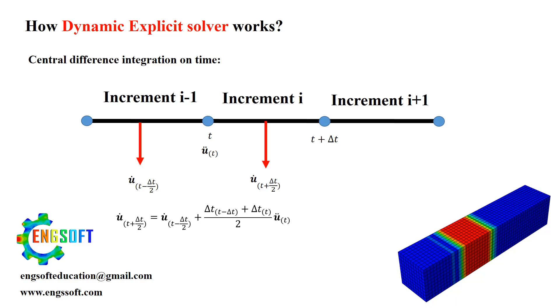Once we have the updated velocity, we can then calculate the displacement at the end of the increment. Again, accuracy is enhanced because we're using the velocity, or slope, in the middle of the span. Now, let's break down the entire explicit solver algorithm.